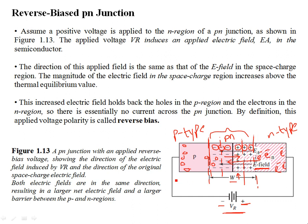This is called the reverse biased PN junction. In a reverse biased PN junction, the polarity is such that the negative of the bias is connected to the P-type region and the positive of the external bias is connected to the N-type region. Owing to that, the electric field enhances and it widens the depletion region or the space-charge region.